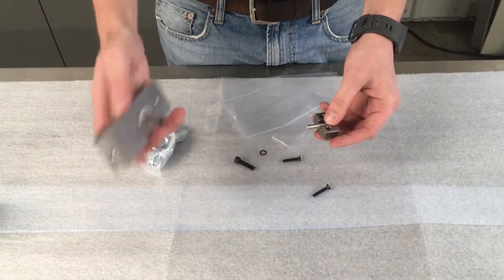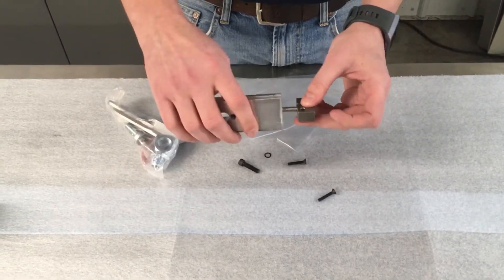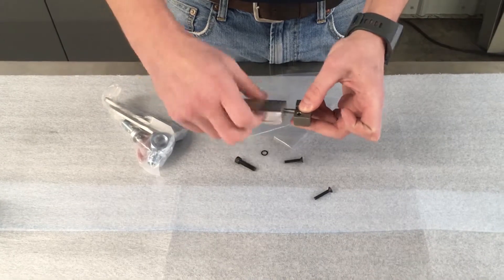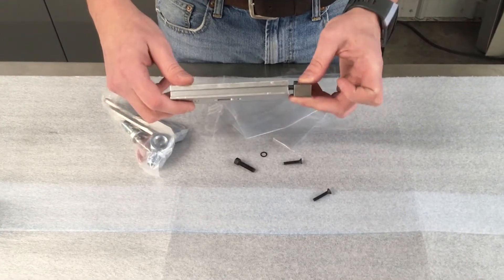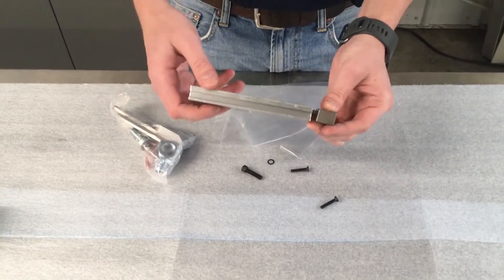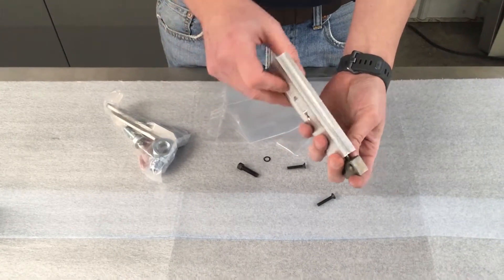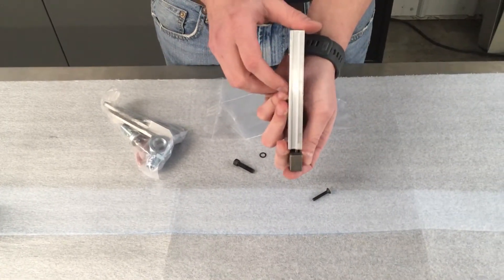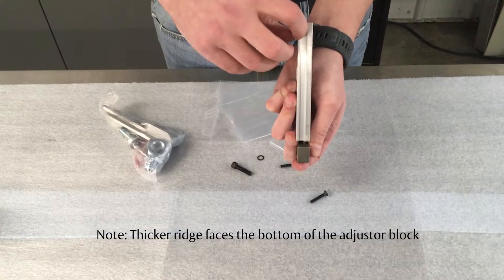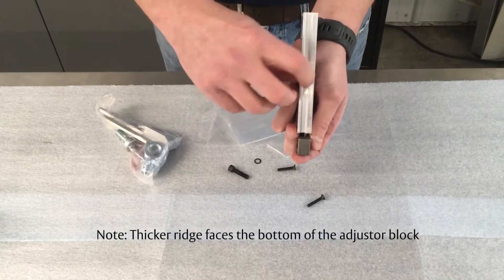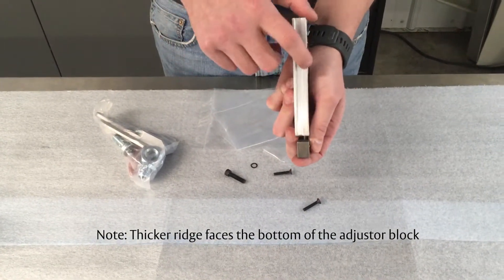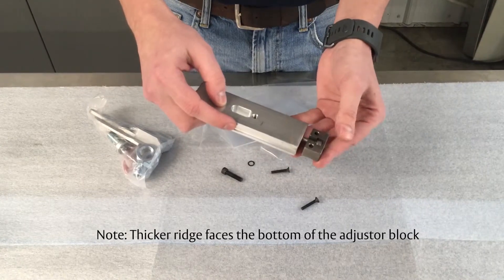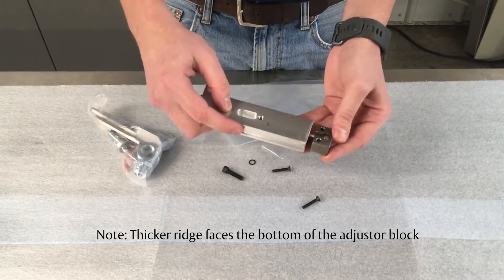Now take the PVPL and screw it onto this assembly. Once it's screwed on, make sure that looking at the PVPL, there is a small ridge and a large ridge. We want that large ridge facing the bottom of the adjustment block.